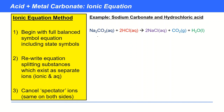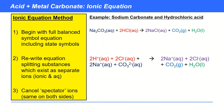Moving on to the next example: sodium carbonate and hydrochloric acid. Pause the video and see if you can write the ionic equation using these steps. Sodium carbonate is aqueous, so it splits into Na⁺ and CO₃²⁻. Note: the 2 in front of Na gives 2 Na⁺ ions, not an Na₂²⁺ ion. HCl has a balancing number of 2, so each HCl gives H⁺ and Cl⁻, requiring coefficients of 2 for each. The 2 NaCl product similarly gives 2 Na⁺ and 2 Cl⁻.